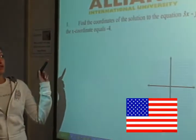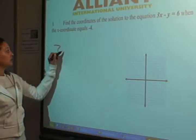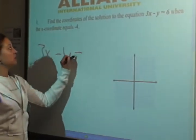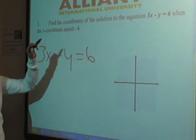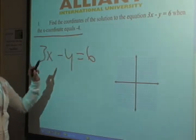Hey guys, today we are going to find the coordinates of the solution to the equation 3x minus y equals 6 when the x coordinate equals negative 4.